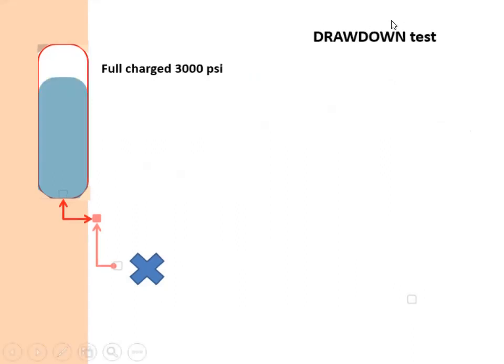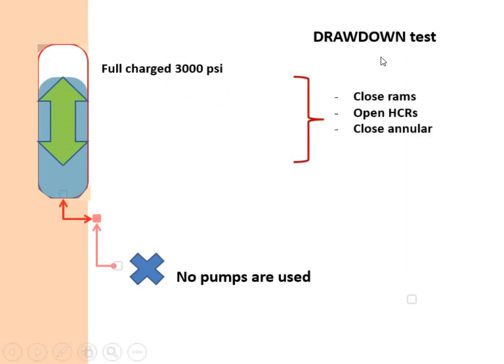Drawdown test is a test to ensure that the accumulator unit has enough capacity in emergency situations. The pumps will be turned off, and the pressurized fluid from the bottle will be used to activate BOP. The bottle pressure will decrease every time BOP function is activated.